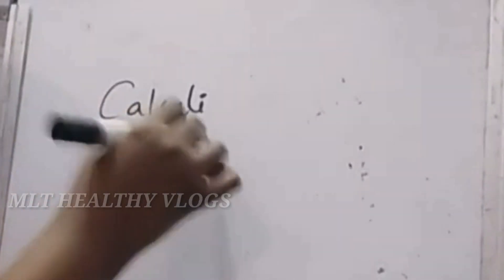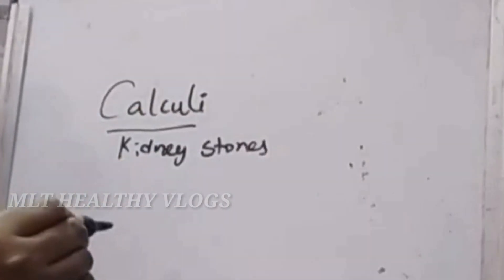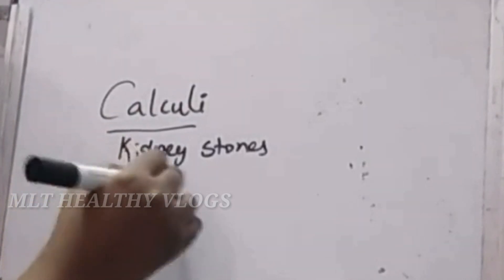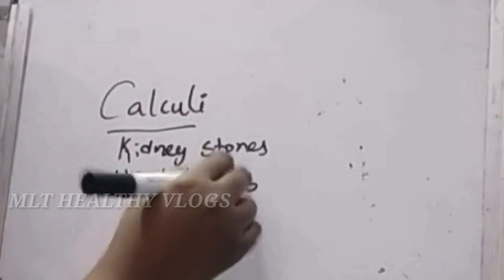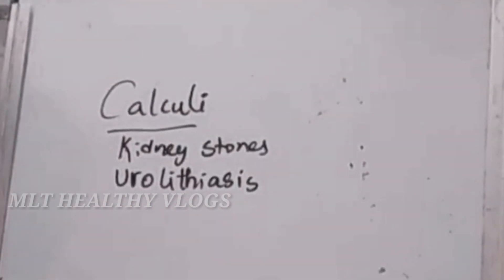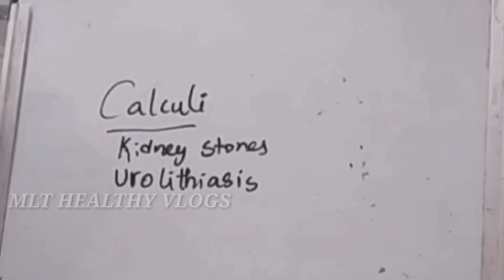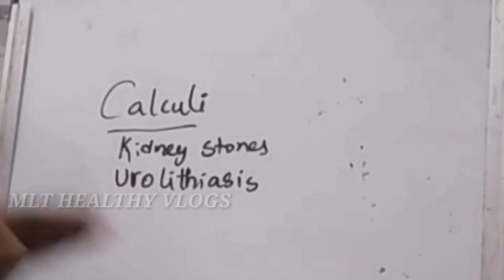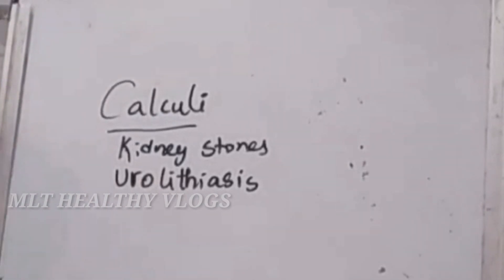So first of all, calculi is nothing but kidney stones. The medical name is urolithiasis. Urolithiasis is the formation of urinary stones or calculi in the urinary tract.